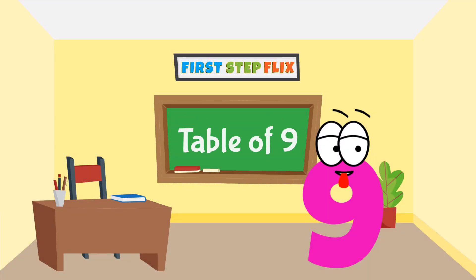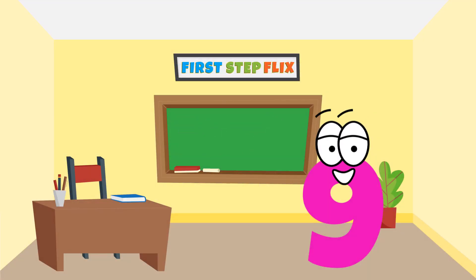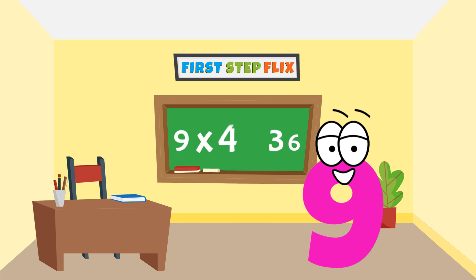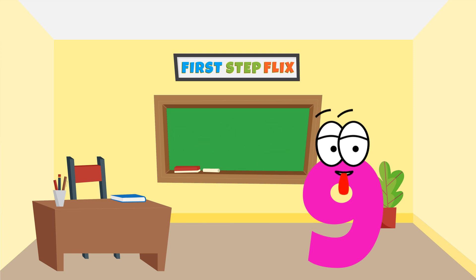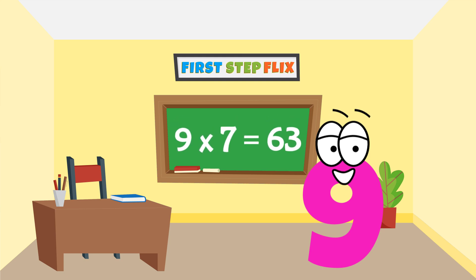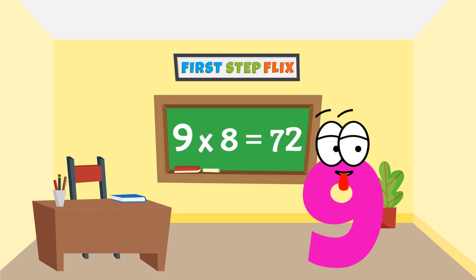Table of nine. Nine ones are nine. Nine twos are eighteen. Nine threes are twenty seven. Nine fours are thirty six. Nine fives are forty five. Nine sixes are fifty four. Nine sevens are sixty three. Nine eights are seventy two.